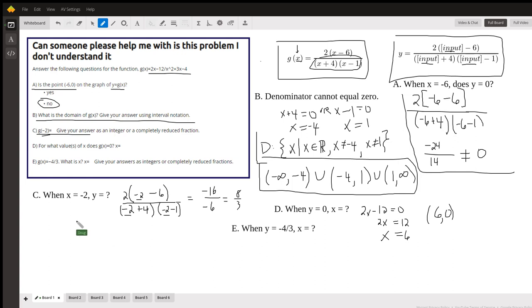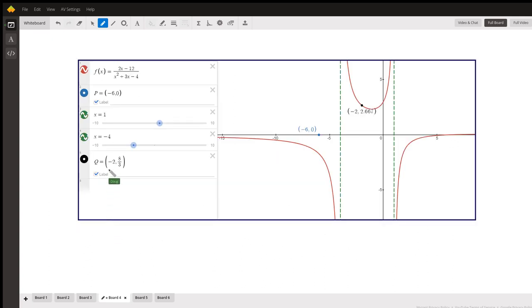So the point negative 2 comma 8 thirds better be on the graph. And here's proof that it is. Here's point q. Negative 2 comma 8 thirds right there on the graph.